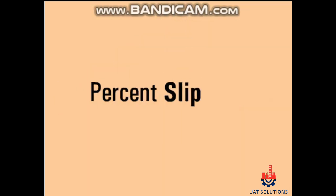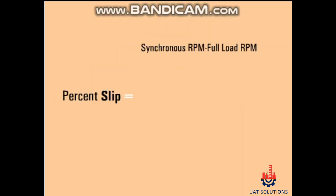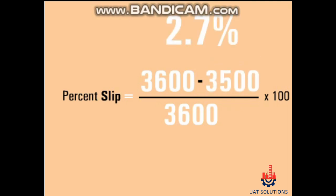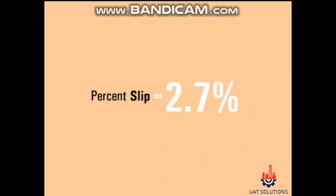Slip is variable depending on the motor design, but for standard NEMA Design B motors, it is 3 to 5 percent, making the typical two-pole induction motor operating at 60 hertz run at 3500 RPM at full load.